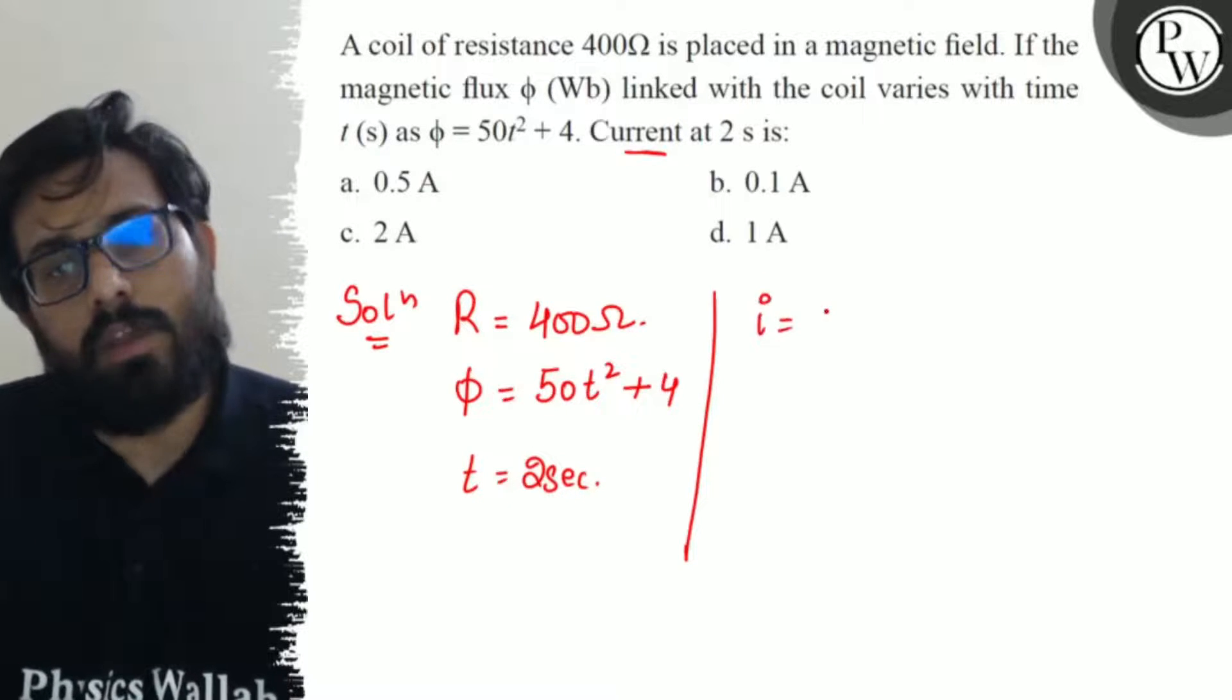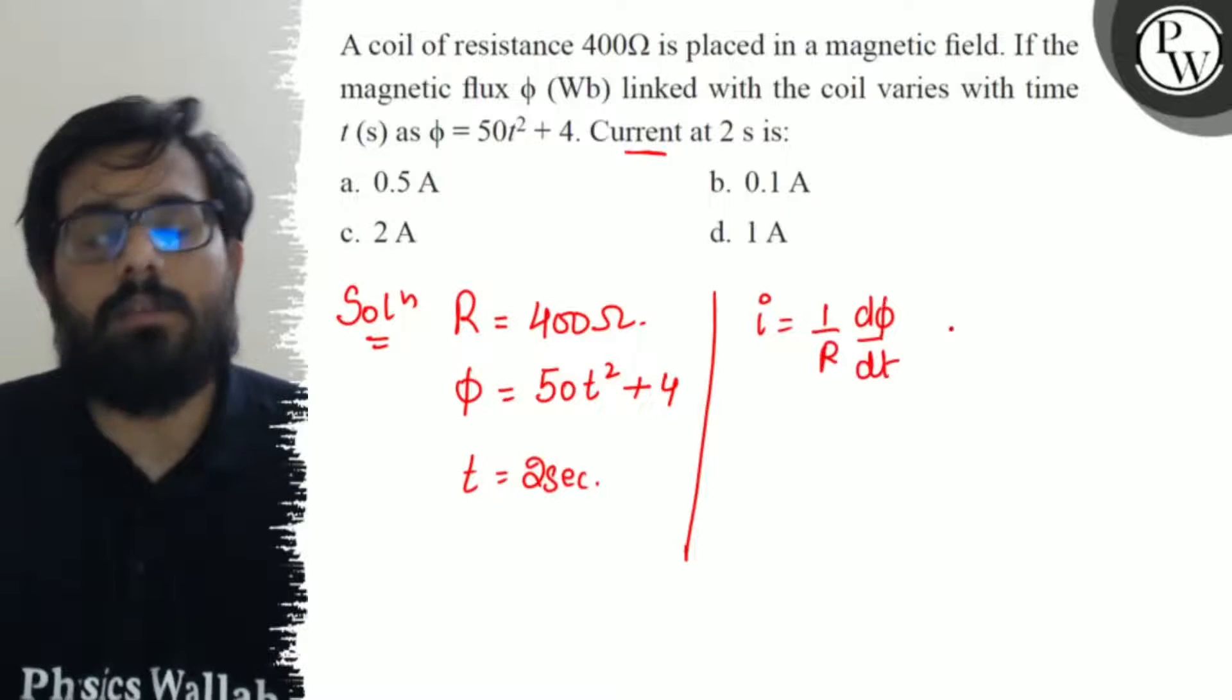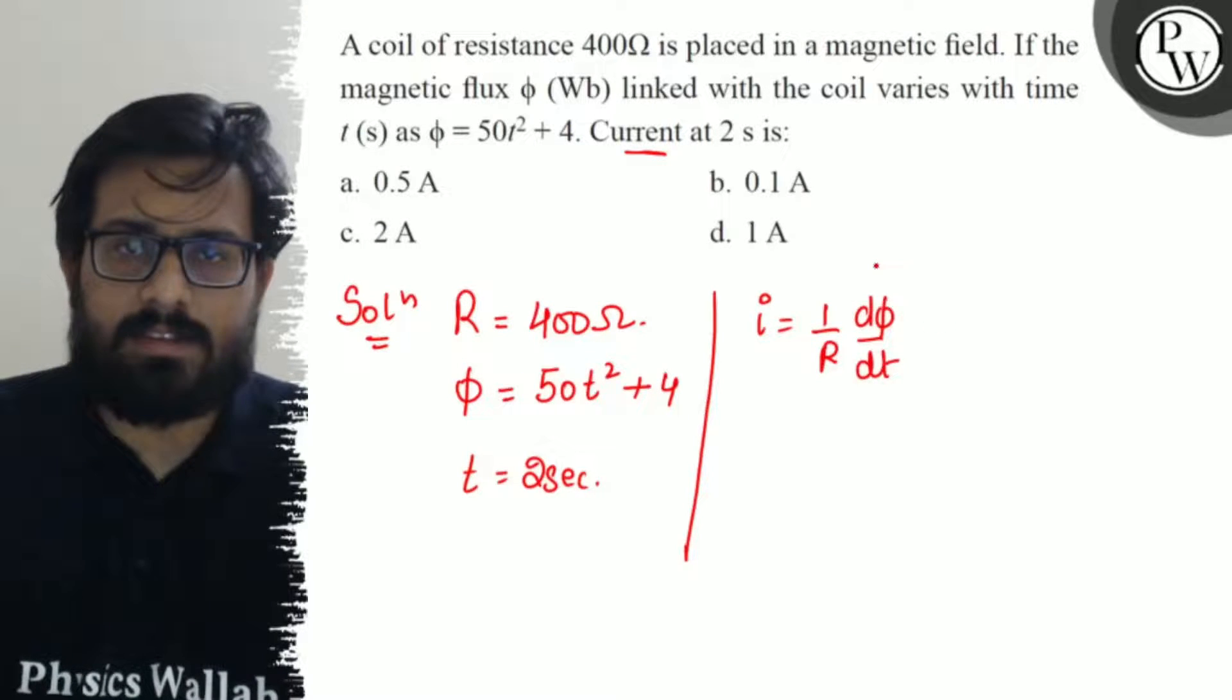I equals 1 upon R into dφ by dt. We know the formula. Right now we are not considering the sign.